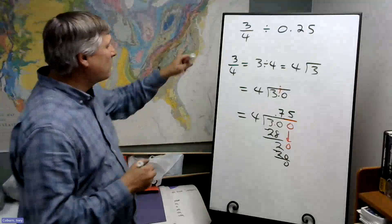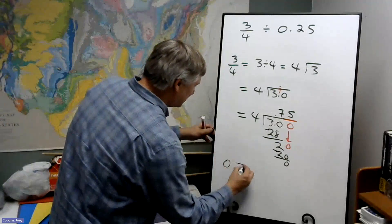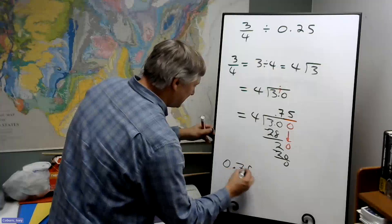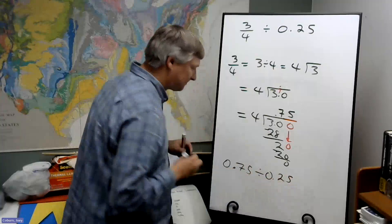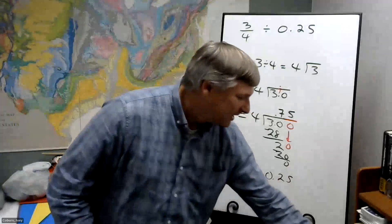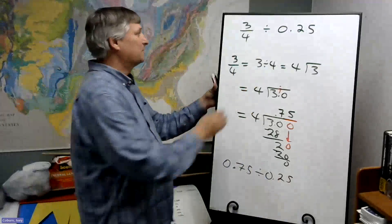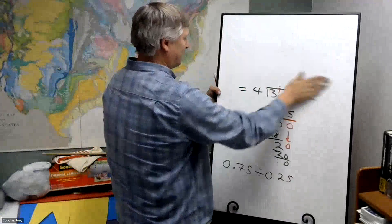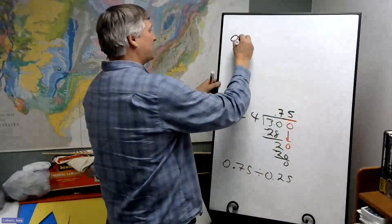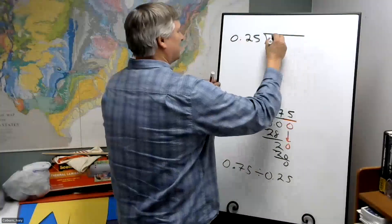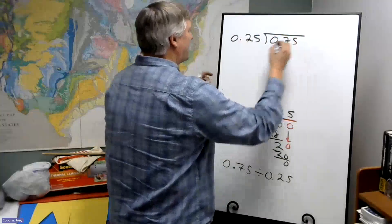So, now what we have is 0.75 divided by 0.25. And now we perform the long division. So, in long division form, it's 0.25. So, we have 0.75.